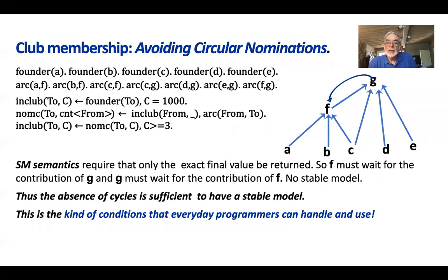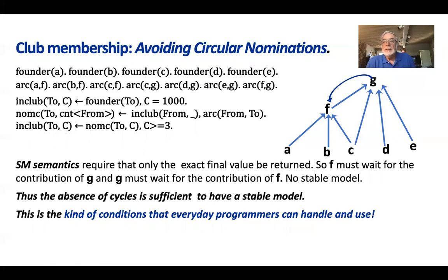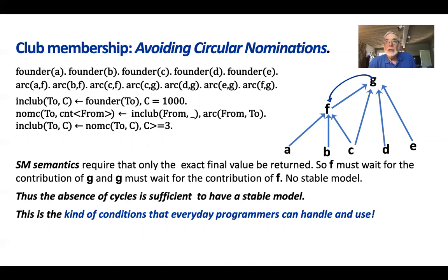However, if for some reason G also decides to nominate F, it turns out that F doesn't get its final count of four and G doesn't get its final count of four either. F cannot show its count of three, and G cannot show its count of three. The result is that no result is produced — only A, B, C remain; neither F nor G are inducted into the club. We don't have a stable model when there is a cycle.